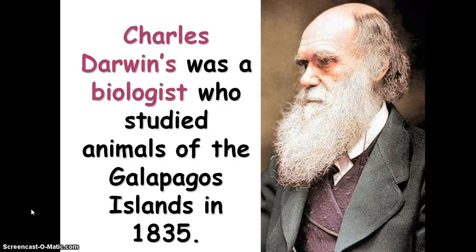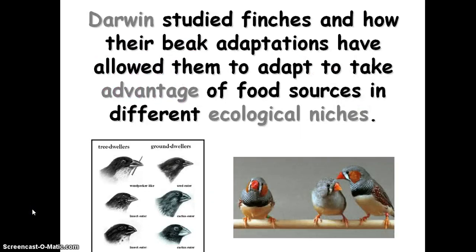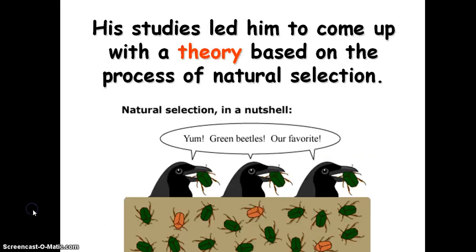Charles Darwin was a biologist who studied the animals of the Galapagos Islands in 1835. Darwin studied finches and how their beak adaptations allowed them to take advantage of food sources in different ecological niches. When you look at the pictures, all of these birds look similar, but what is different is that they have different shaped beaks, and those beaks allow them to eat different foods. When they eat different foods, they're not competing with one another — they have different niches, different roles in the food chain.